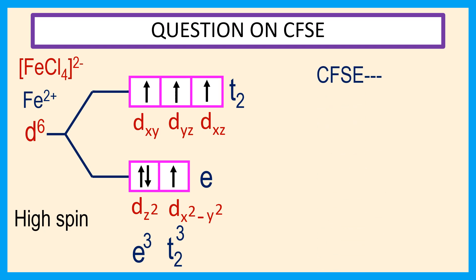CFSE is equal to minus 3 into 0.6 for 3 electrons in e orbital, plus 3 into 0.4 for 3 electrons in t2 orbital, into delta t is equal to minus 0.6 delta t.